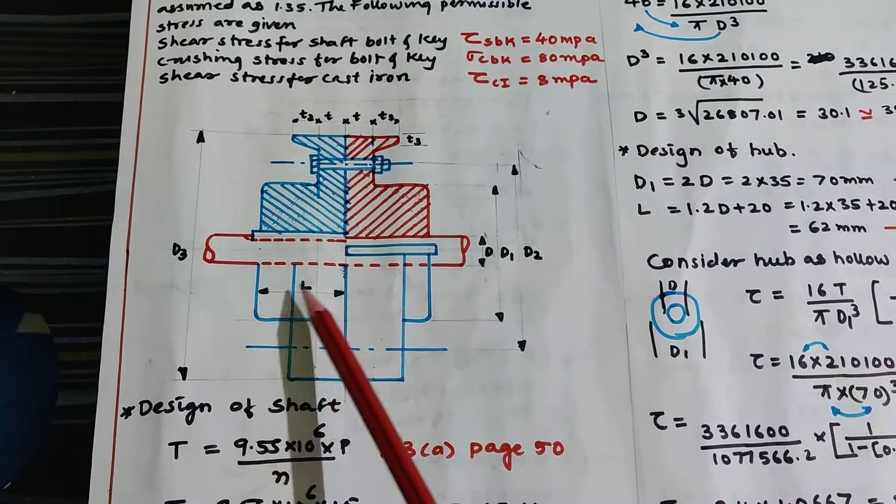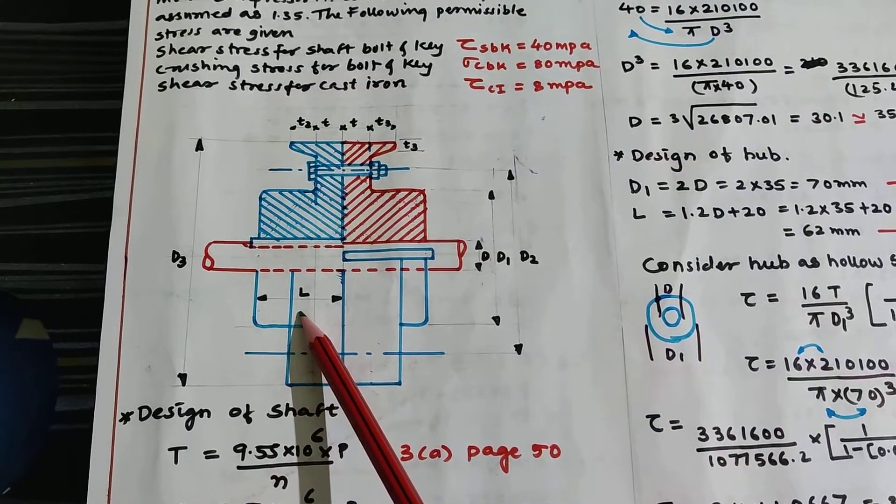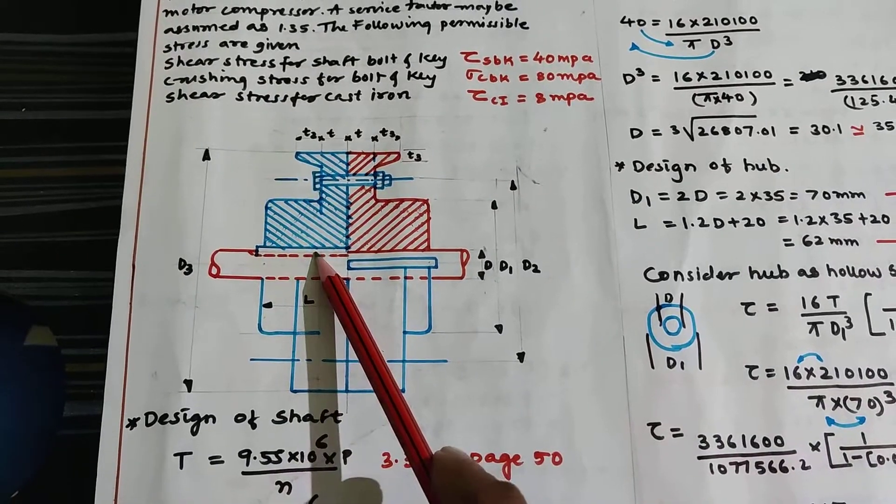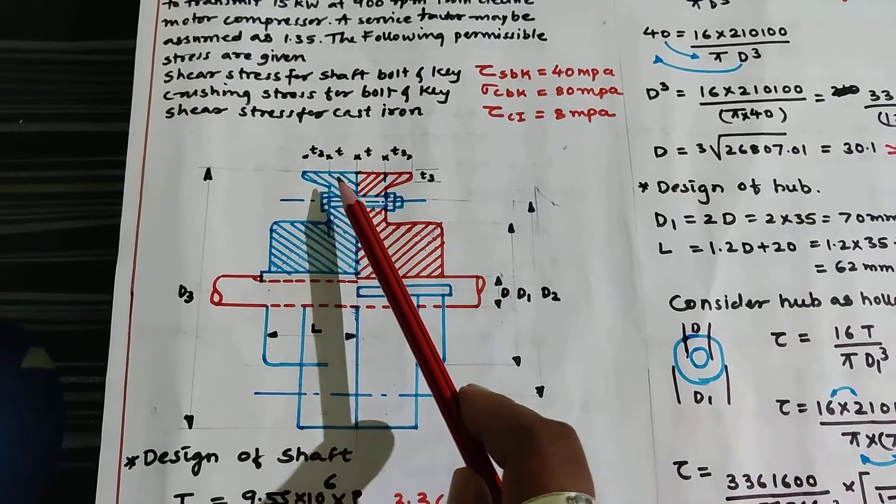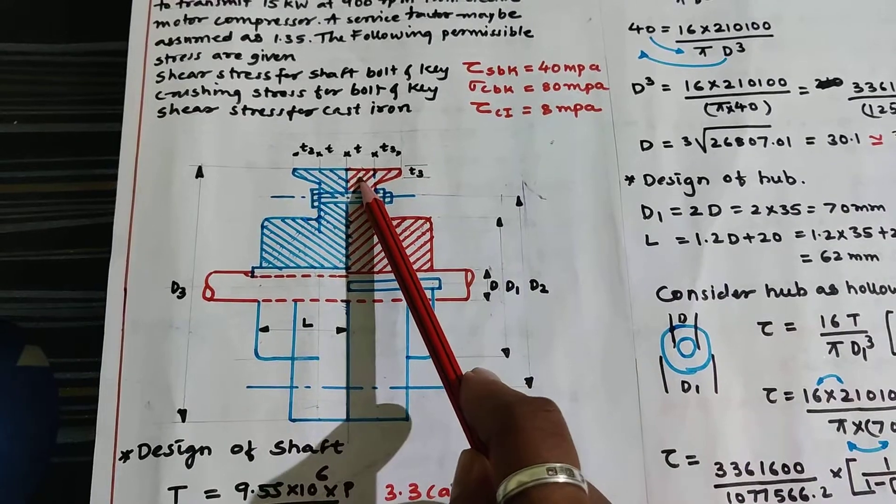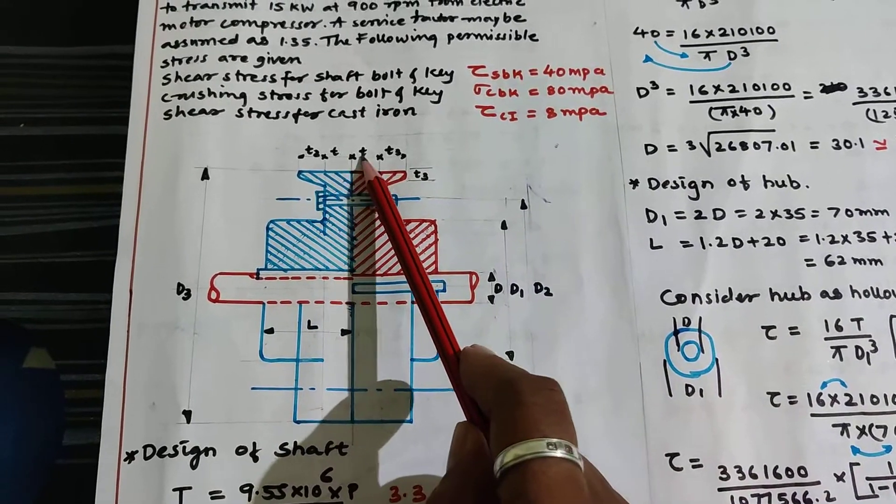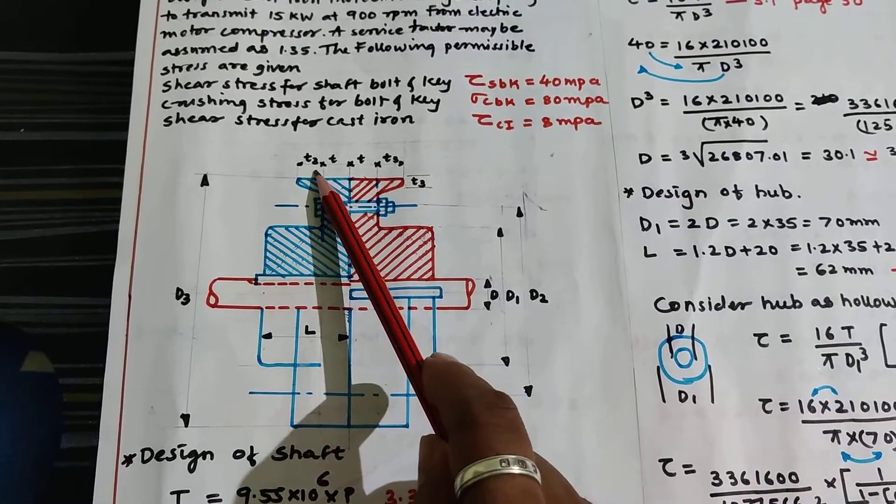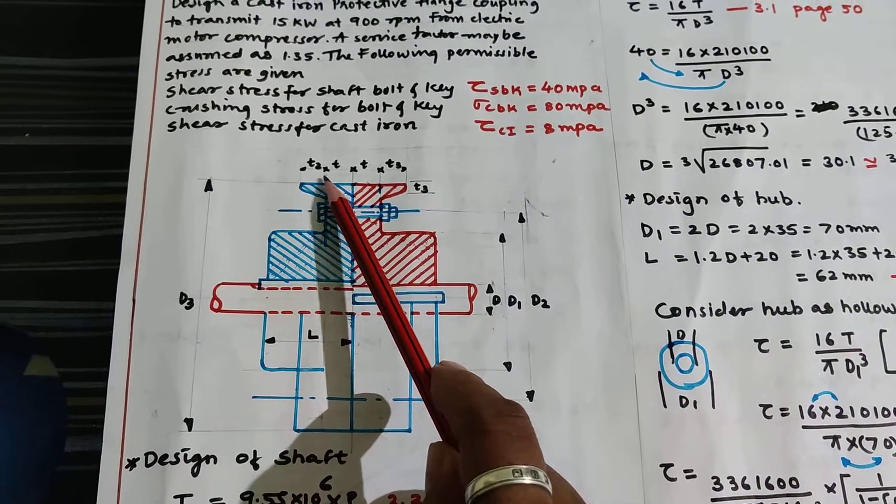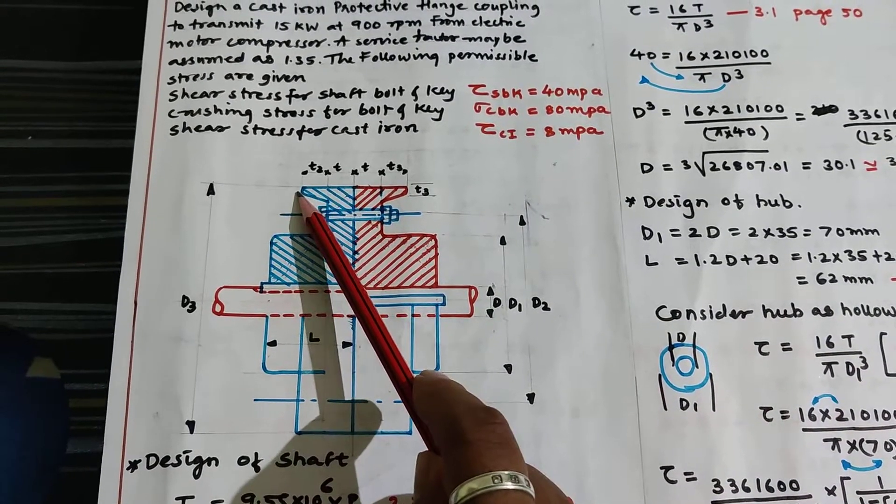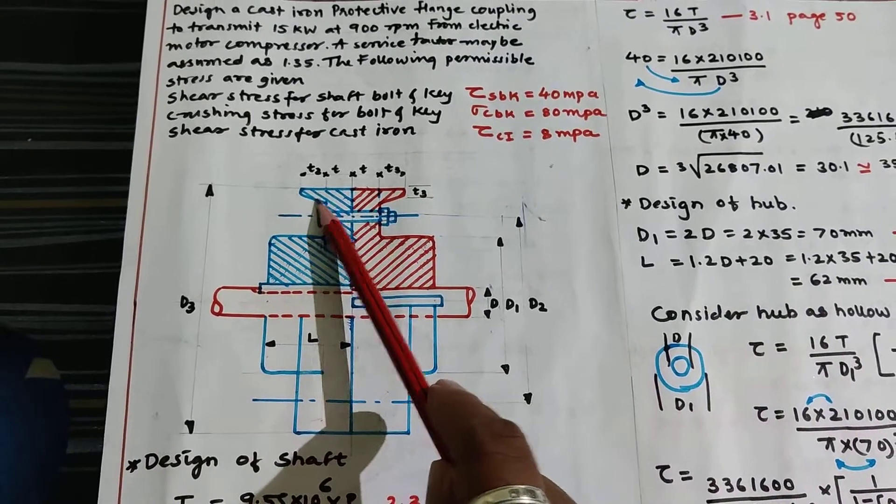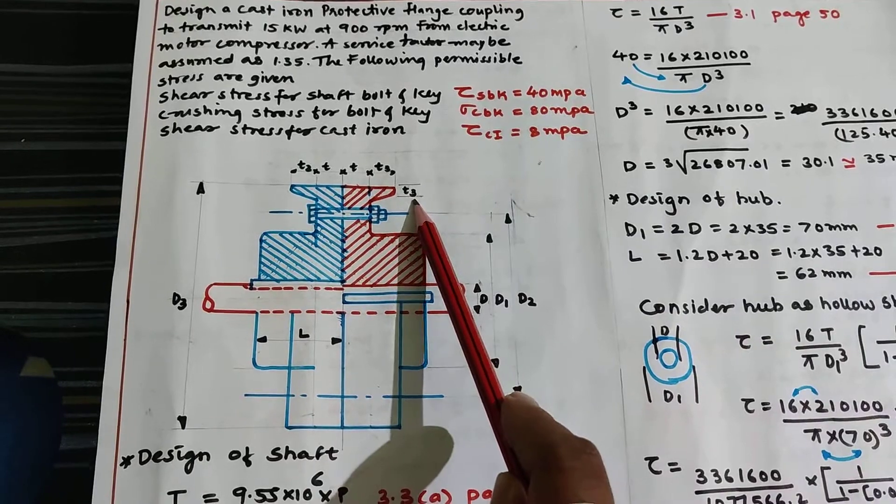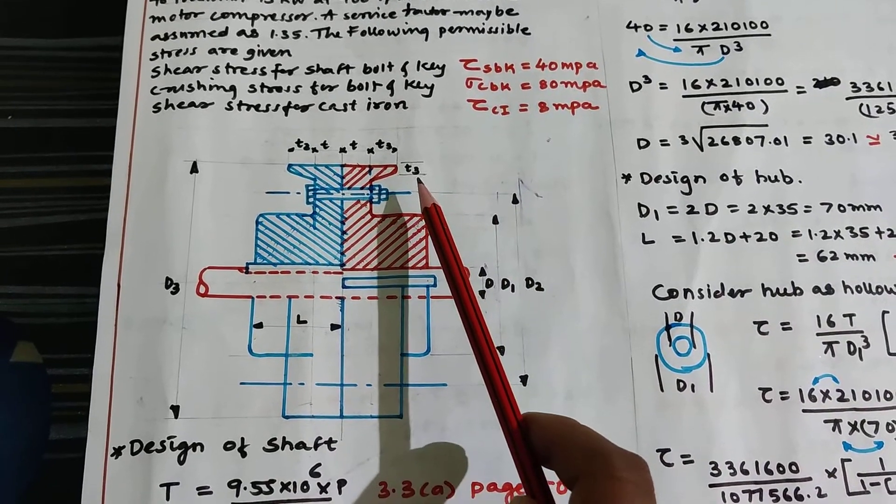The length of the flange is denoted by L, which is also equal to length of the key. At the top, this is thickness of flange denoted by T and T2 is the extra protective layer. This thickness is called T3, which is thickness of protective layer.